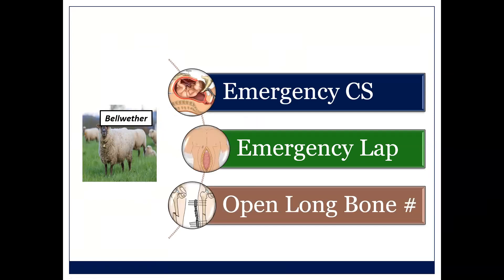In a district hospital, the index procedures you're expected to do are: emergency caesarean section, both spinal and GA; emergency laparotomy — primarily an appendectomy and a ruptured ectopic; and you should be able to at least clean out an open long bone fracture. I'm going to be talking around these sorts of cases rather than complex anesthesia, which has a whole other set of variables.